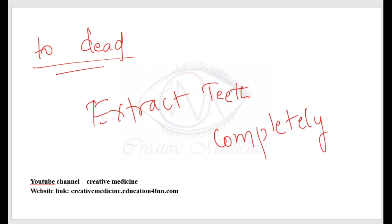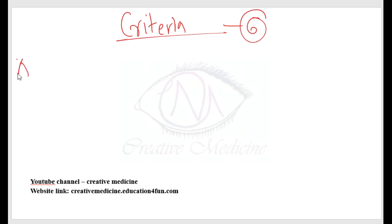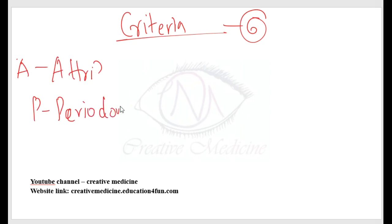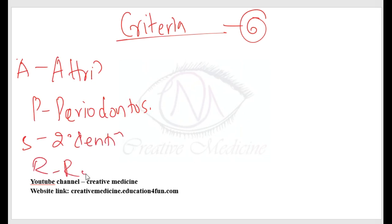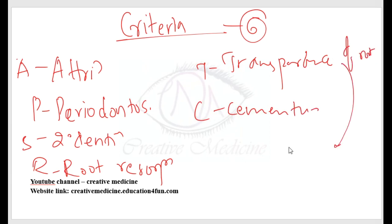In Gustafson's criteria we have six criteria, which can be remembered by the mnemonic APSRTC: A for attrition, P for periodontosis, S for secondary dentition, R for root resorption, T for transparency of the root, and C for cementum deposition. Out of these criteria, transparency of the root is the most accurate and most reliable.